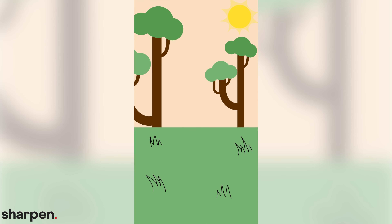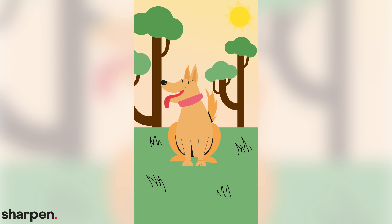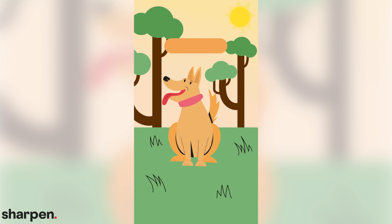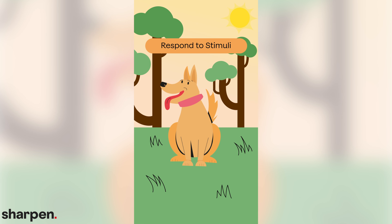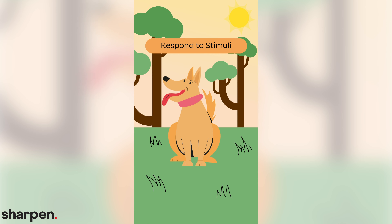When living organisms detect changes to the environment, they are able to respond. For example, a dog will pant when it's hot, a plant will bend to follow the sun, and a human will put on a coat when it turns cold.